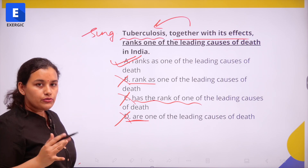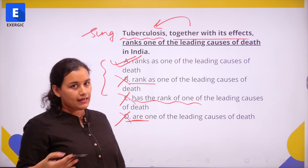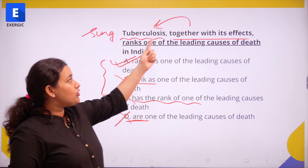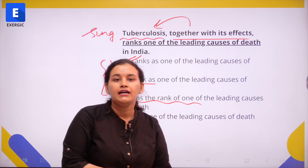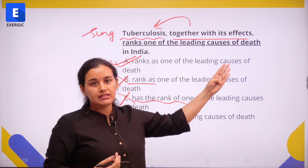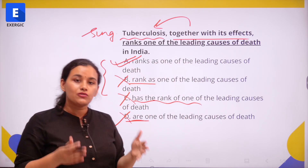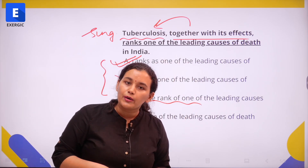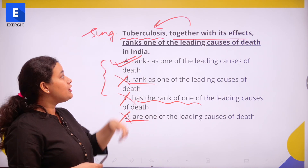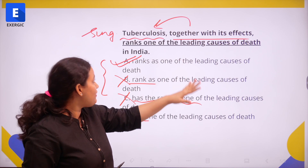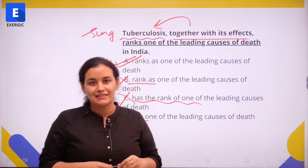The main confusion among students will be between "ranks as" and "rank as" because we are saying tuberculosis together with its effects, which might seem like a plural subject. However, we are using a connective phrase, so it is not going to change the number of the subject, which is singular, and the verb is also going to be singular. So the correct sentence is: Tuberculosis together with its effects ranks as one of the leading causes of death.